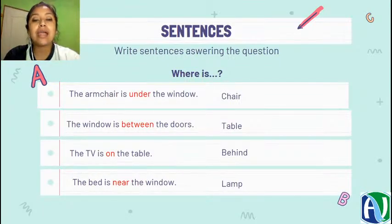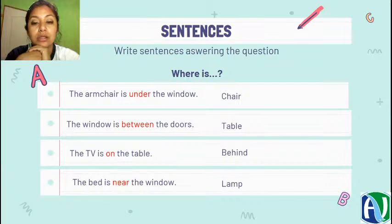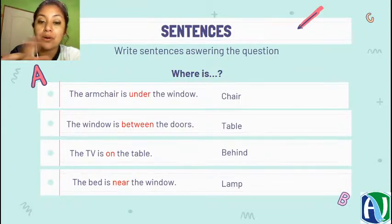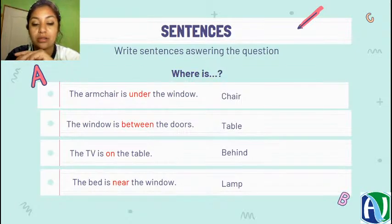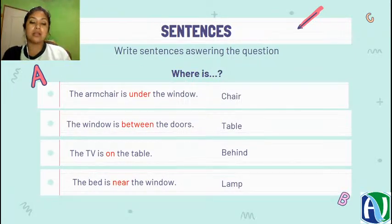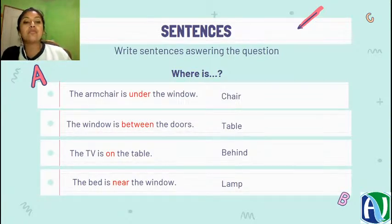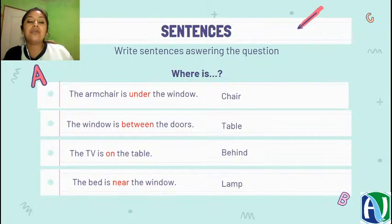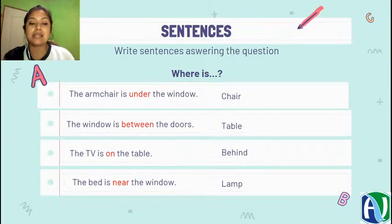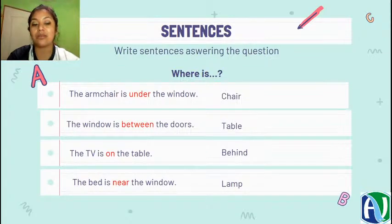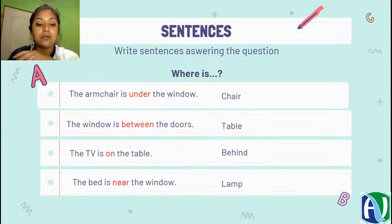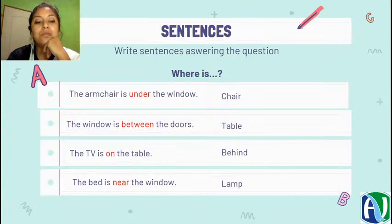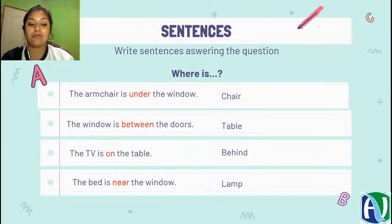Ok, how to write sentences answering this question. ¿Cómo vamos a escribir oraciones respondiendo a la pregunta where is? The armchair is under the window. Aquí estamos practicando dos vocabularios, los furnitures y de igual manera las prepositions. The armchair is under the window. El sillón está debajo de la ventana. The window is between the doors. La ventana está en medio de las dos puertas. The TV is on the table. La televisión está sobre la mesa. And the bed is near the window. Y la cama está cerca de la ventana.